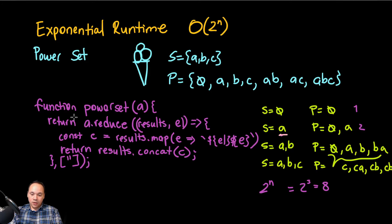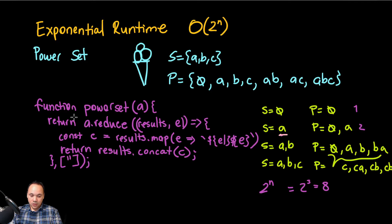Let's trace through with the array [a]. We start the base case: results equals the empty string array. The element will be a. We take a concatenated with the empty string, so c will be a. Then results is the empty string concatenated with a, giving us empty and a — nice.